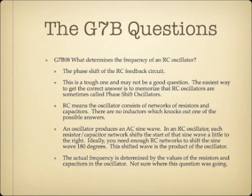What determines the frequency of an RC oscillator? The answer is the phase shift of the RC feedback circuit. RC oscillators are sometimes called phase shift oscillators. RC means the oscillator consists of networks of resistors and capacitors — no inductors. An oscillator produces an AC sine wave, and in an RC oscillator, each resistor-capacitor network shifts the start of the sine wave a little to the right. You need enough RC networks to shift the sine wave 180 degrees. The actual frequency is determined by the values of the resistors and capacitors.